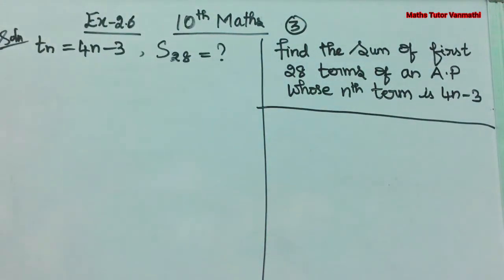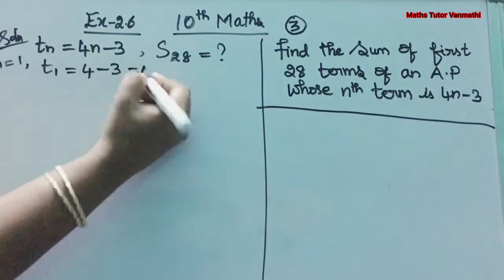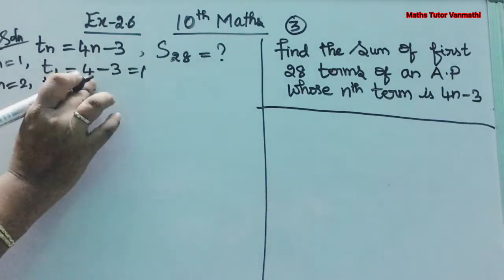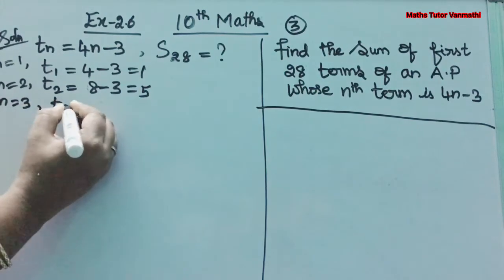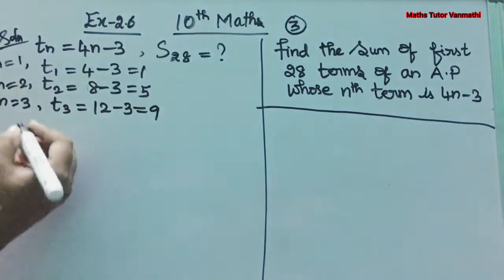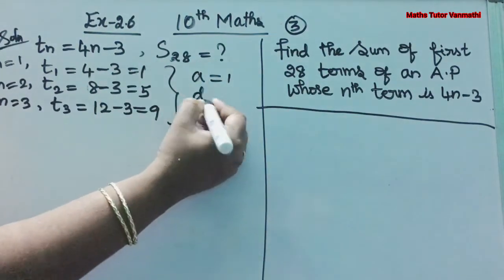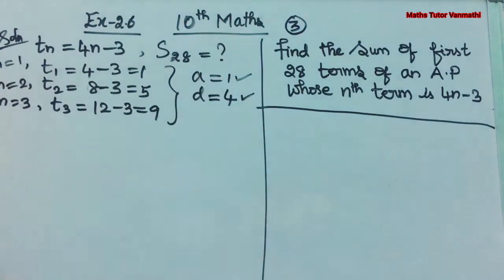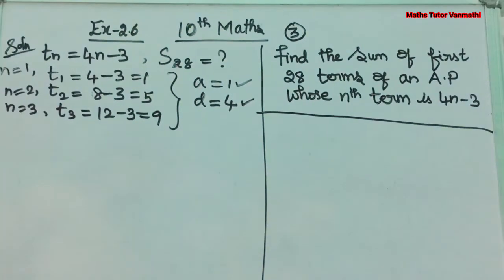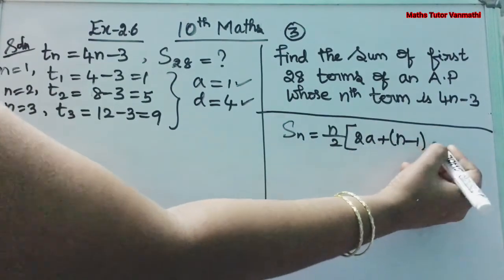We need the A and D values, which we can get from the TN formula. Substituting N = 1: T1 = 4(1) − 3 = 1. Substituting N = 2: T2 = 4(2) − 3 = 5. Substituting N = 3: T3 = 4(3) − 3 = 9. So A = 1 and D = 5 − 1 = 4 (also 9 − 5 = 4). The SN formula is: SN = N/2 × (2A + (N−1) × D).